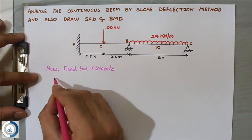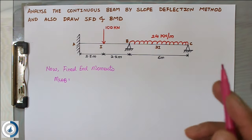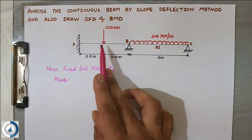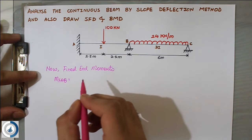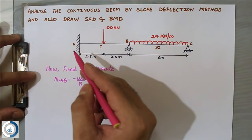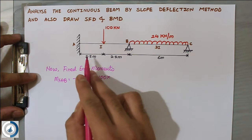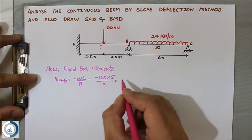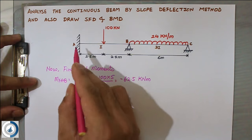For MFAB, since span AB has a point load at the center, the fixed end moment formula is minus WL by 8. The minus sign is because MFAB is anti-clockwise. W is 100 kN and L is 5 meters, so minus 100 × 5 ÷ 8 = minus 62.5 kNm.